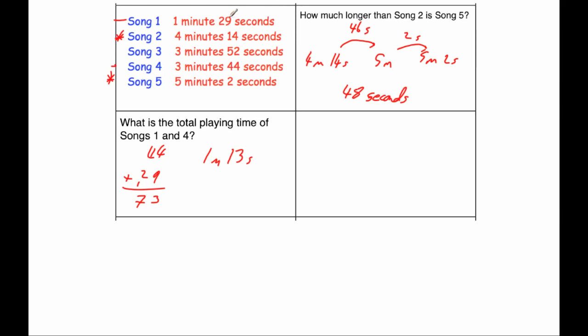When we add together the seconds of 29 seconds and 44 seconds, we get 1 minute and 13 seconds. But we've also got another 1 minute and another 3 minutes, so it's another 4 minutes we need to add on. Our answer would be 5 minutes and 13 seconds.